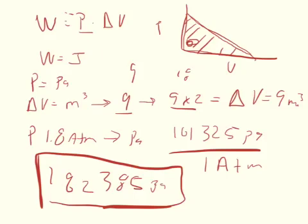So the change of volume is 9. We can multiply our change of volume of 9 by 182,385 pascals, and we can get that the work done on the gas is going to be